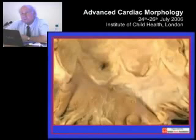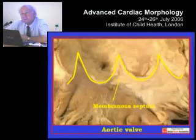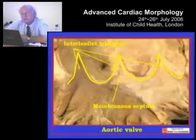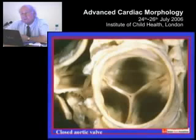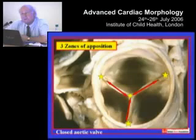Here is an aortic root that I've split apart and taken away the valvar leaflets to show the arrangement of the aortic valve, which once more is arranged not in annular fashion but in semilunar fashion. Integral with one of the interleaflet arrangements in the aortic valve is the membranous septum, and these areas — the arterial wall extending up to the sinutubular junction — we call the interleaflet triangles. It is these semilunar arrangements that permit the aortic valve, looking down on it from the arterial aspect, to close in competent fashion, with the three attachments of the leaflets at the sinutubular junction and three zones of apposition extending from the sinutubular junction to the center point of the valvar mechanism.